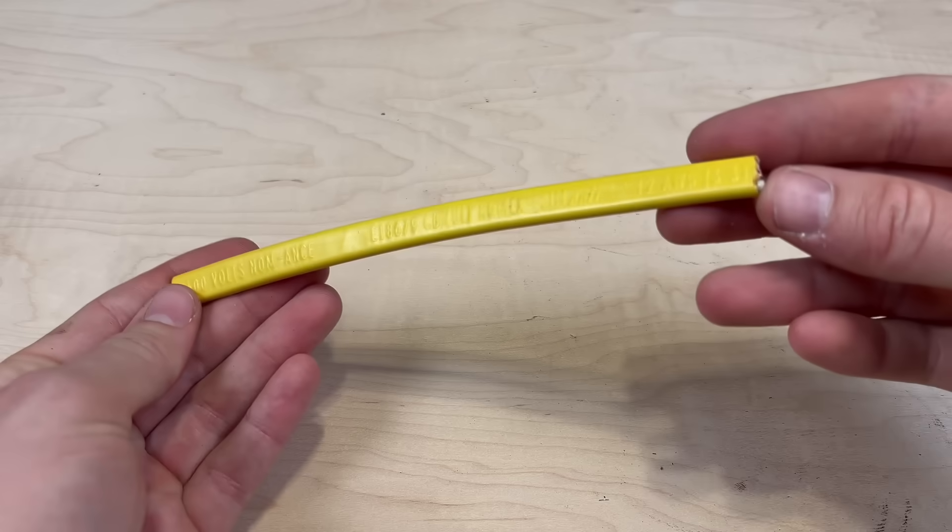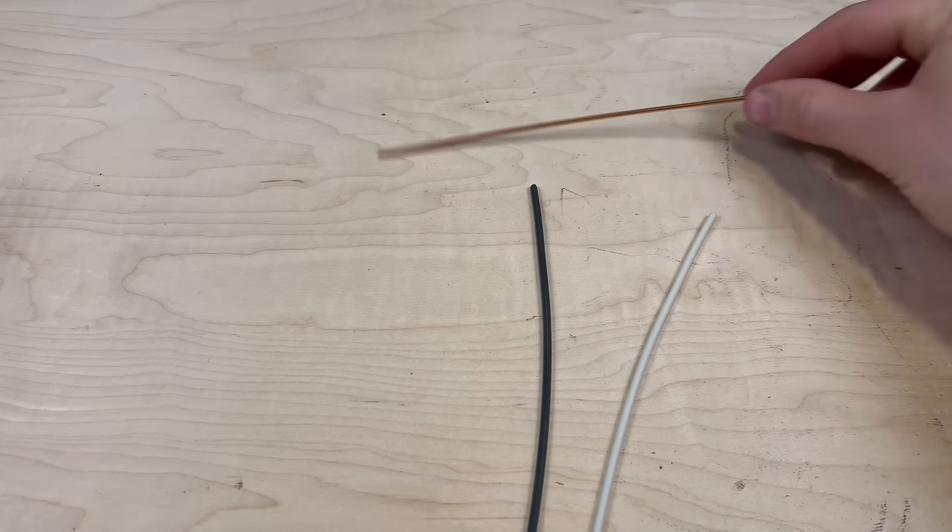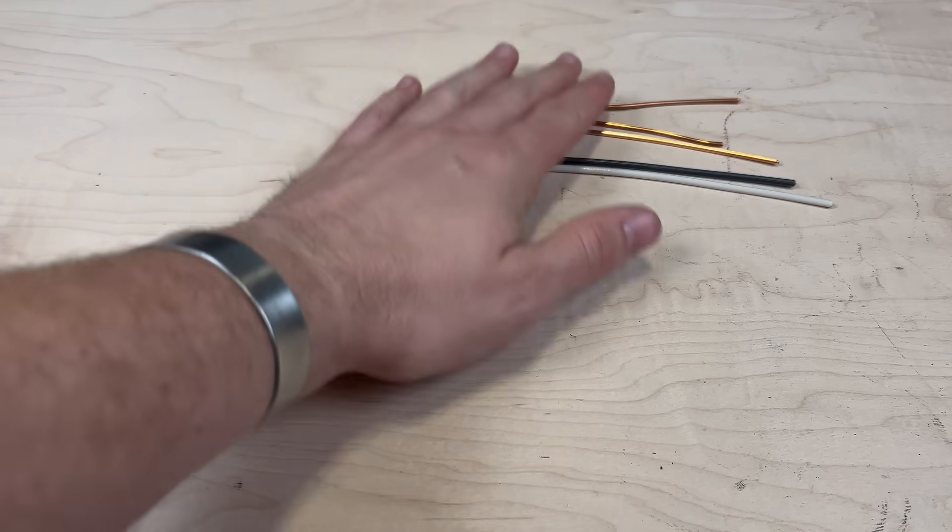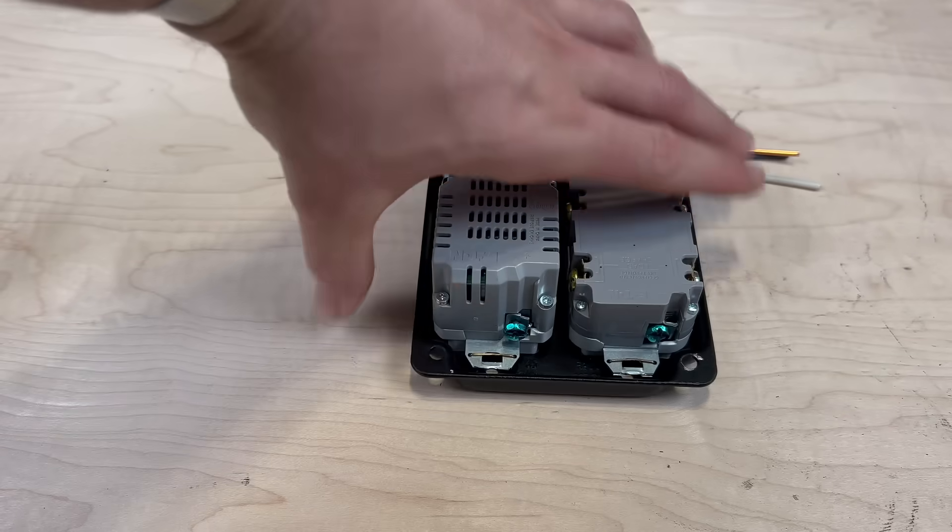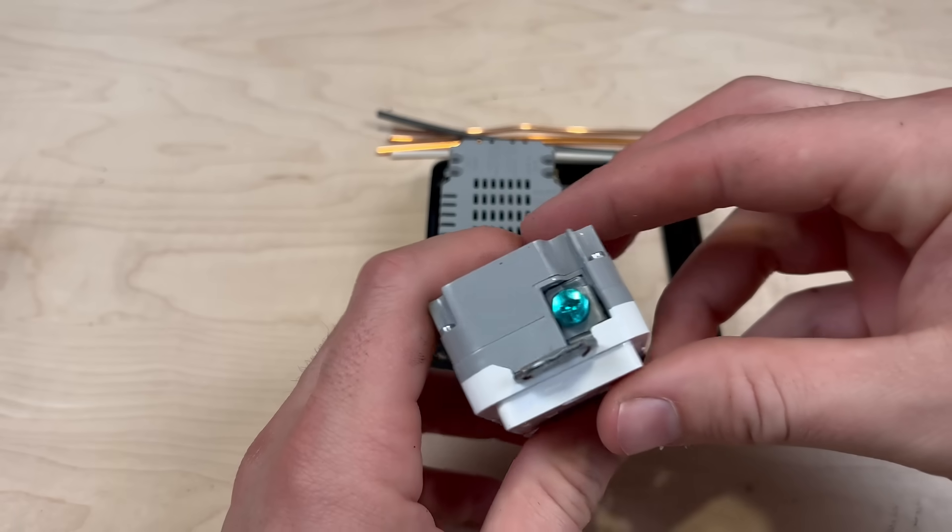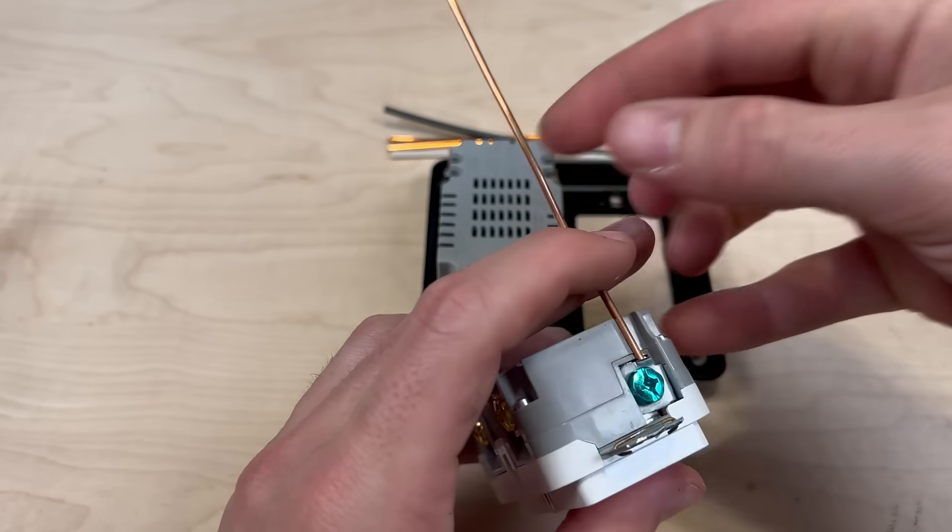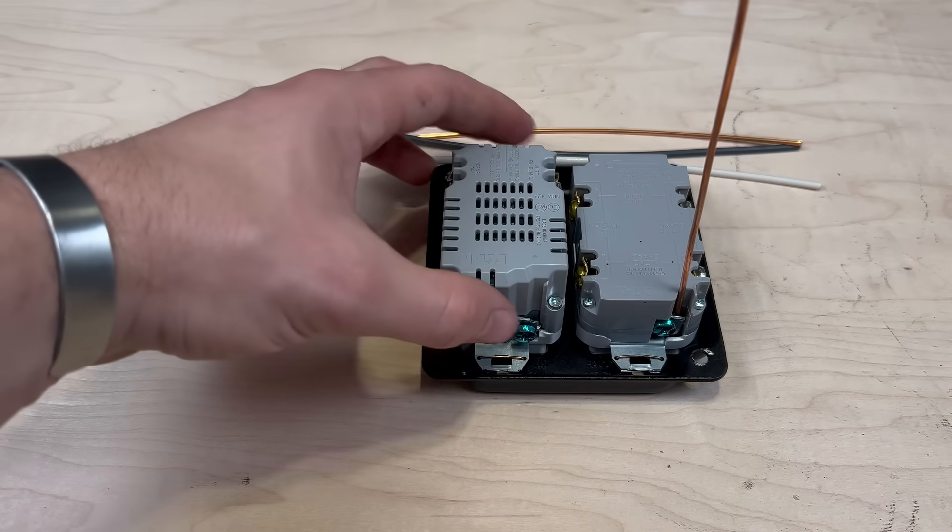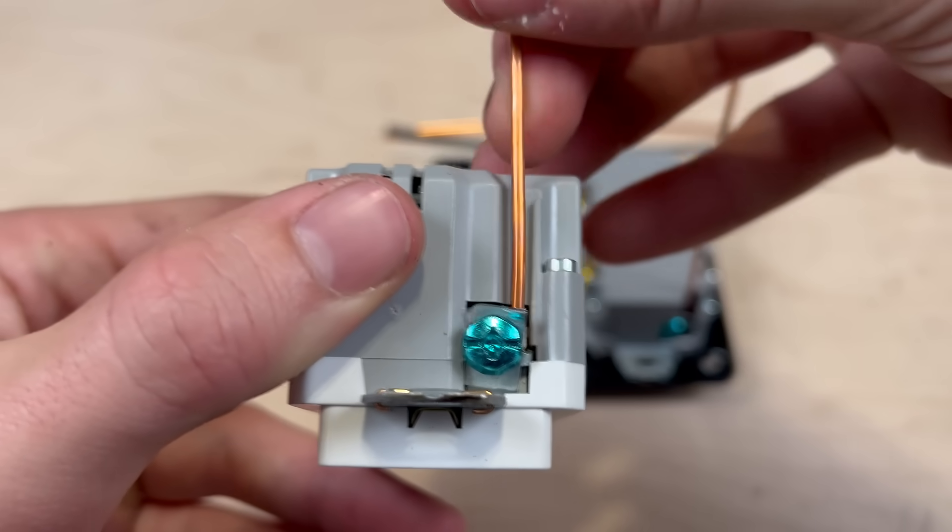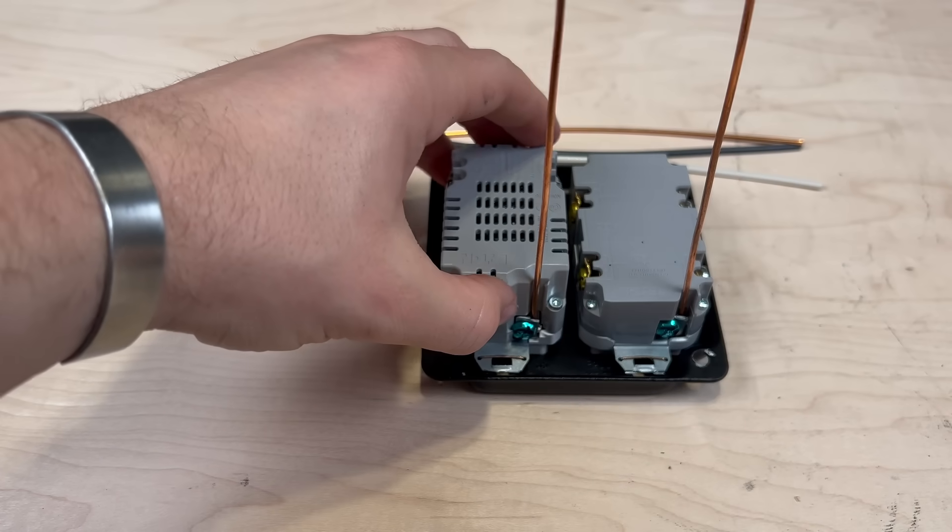I just so happen to have some leftover 12 gauge solid wire from an earlier project. But if you don't, you should be able to buy a couple feet of 12-2 Romex from your local home improvement store. Set your receptacles in the cover plate and then place them face down on the table in front of you. Connect a 6 inch piece of ground wire to the ground terminal on each outlet. To do this, just slide the wire behind the pressure plate until it bottoms out, and then tighten down the green screw. After making each connection, gently pull on the wire to ensure you have a tight fit.